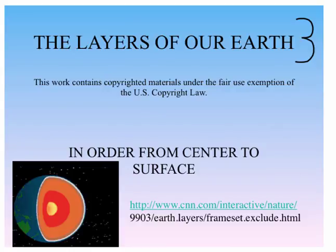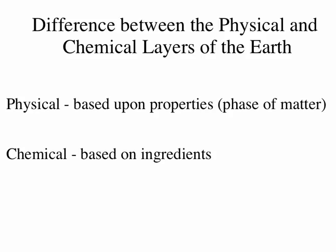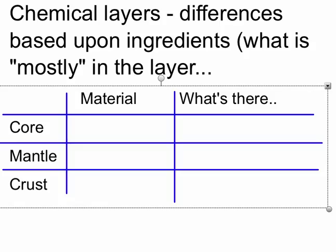Hi, this is video three about layers of our earth, and in this video we are going to concentrate on the chemical layers. Chemical layers are based on the ingredients that make the layers chemically different, like ingredients in a recipe. So there are three chemical layers: the core, the mantle, and the crust.